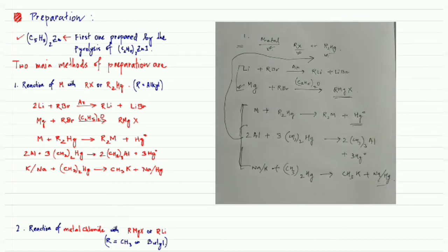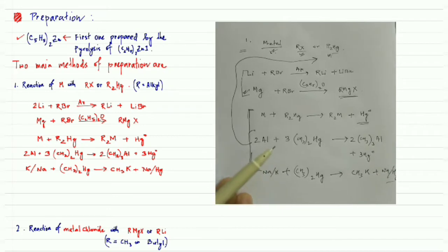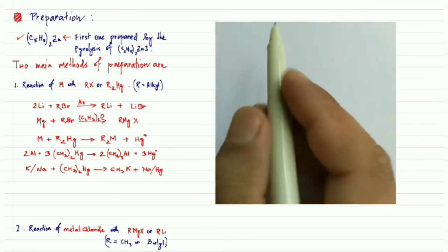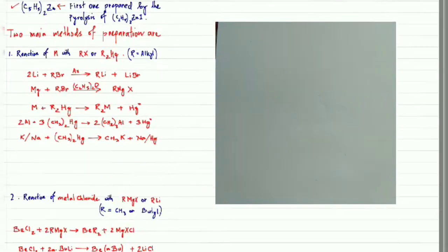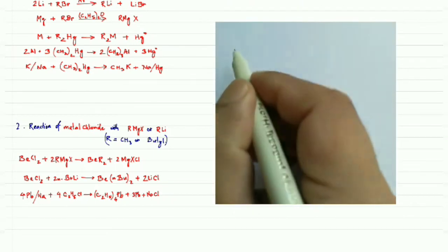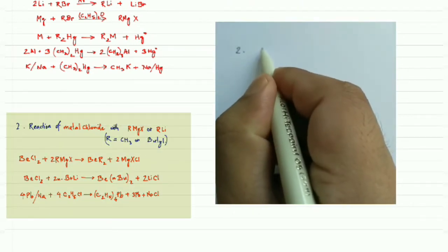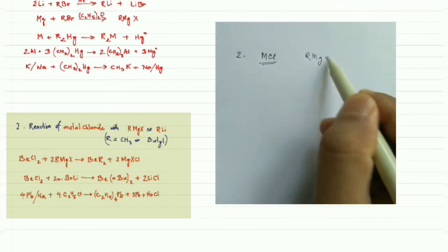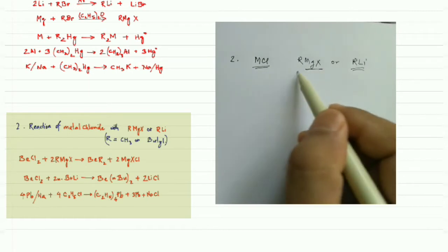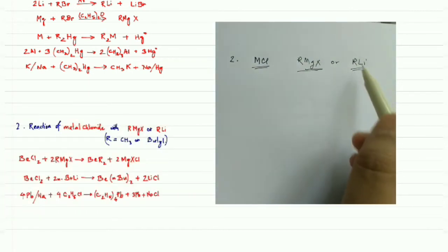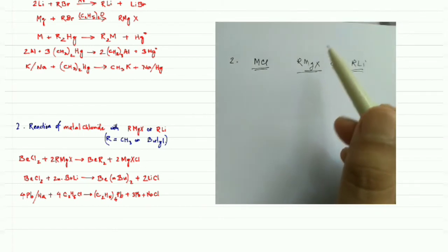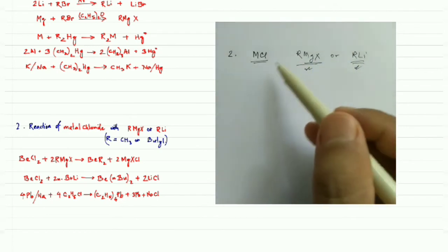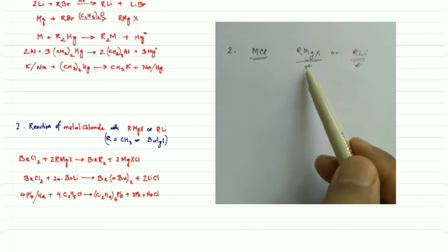So those are the first type of reactions to prepare organometallic compounds of main group elements. Now, the second method is the reaction of a metal chloride with a metal reagent. The lithium organometallic complex can be prepared by the first method, or by using the first method we can prepare RMgX or RLi, which can then be used as reagents in the second method.